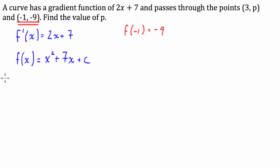So, let's go about doing that. I'm going to go f of negative 1 is equal to negative 1 squared plus 7 times negative 1 plus c. And that's going to equal negative 9.